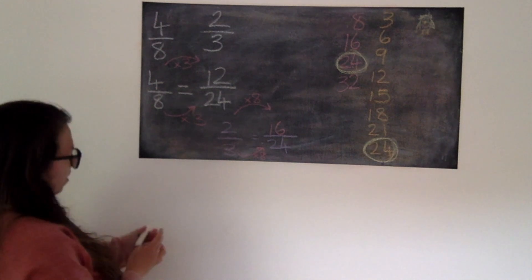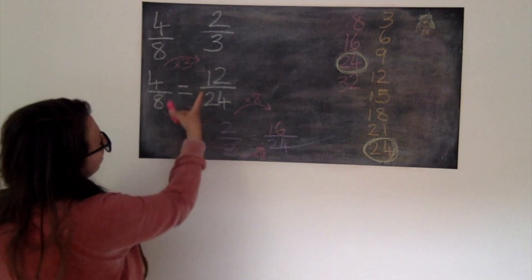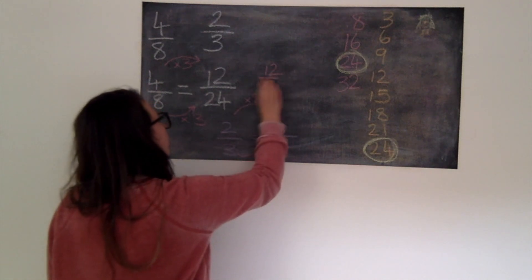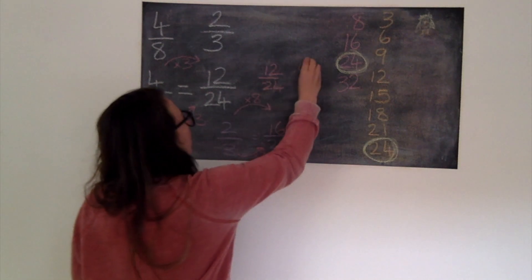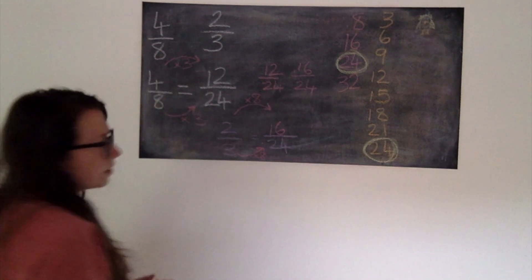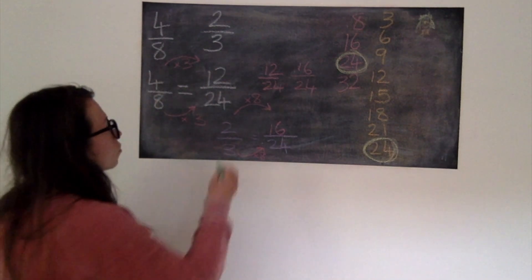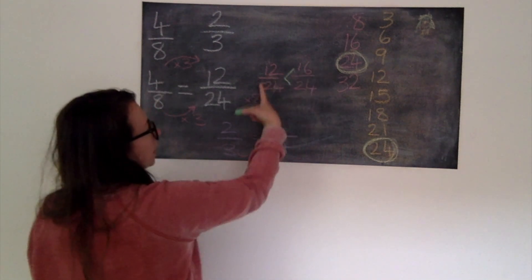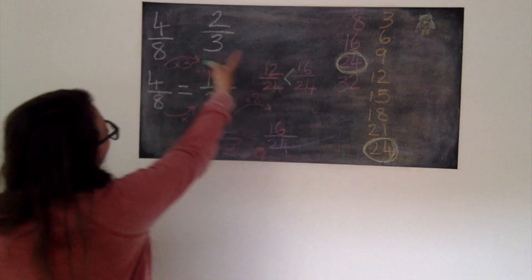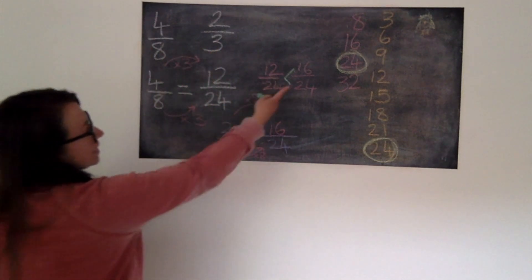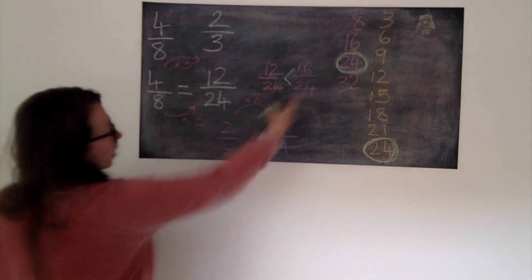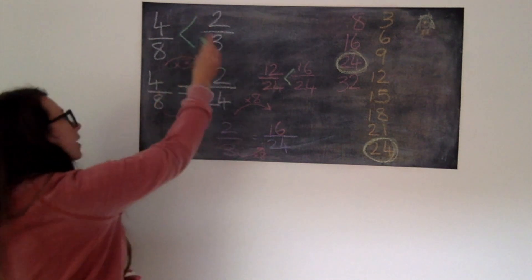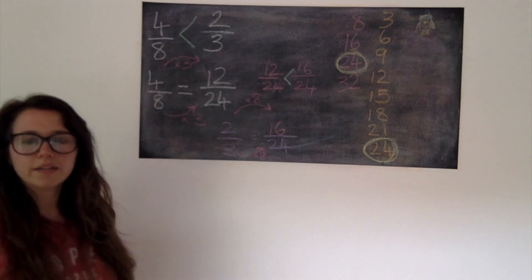I now have these two fractions. I have 12/24ths and 16/24ths. I can see that 16/24ths is the greater fraction. The denominators are the same. It's 16 pieces rather than 12. So if we come back to our original fractions, 16/24ths, which is the bigger one, is the same as 2/3rds. So what I will say 2/3rds is greater than 4/8ths.